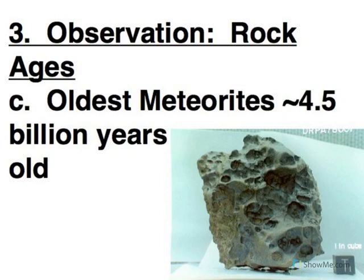Meteorites. Meteorites are typically pieces of asteroids that have gotten knocked off. And when we analyze the ages of meteorites, the oldest ones are about 4.5 billion years old. So everything keeps coming in in this 4.something billion year age.